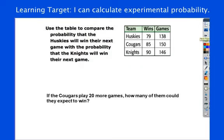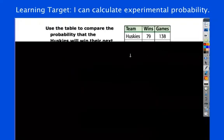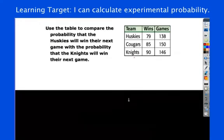All right, two more questions. Let's start with this one. Let's ignore this last question. We're going to compare the probability that the Huskies will win to the probability that the Knights will win. So, in other words, we're trying to figure out who's more likely to win the next game, and think about what we're basing this on.